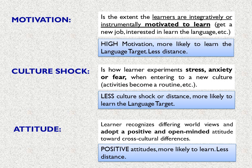The first psychological factor is motivation. It is the extent to which learners are integratively or instrumentally motivated to learn. For example, you are motivated because you get a new job or you are genuinely interested in learning the language. High motivation makes you more likely to learn the target language, meaning less distance.